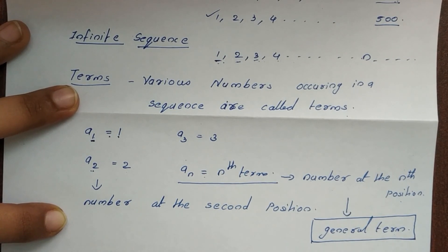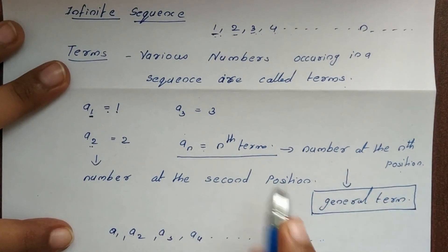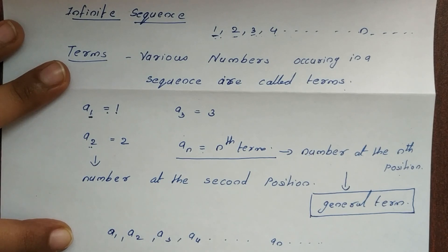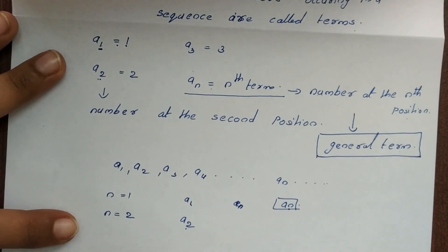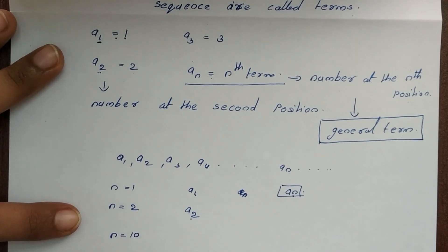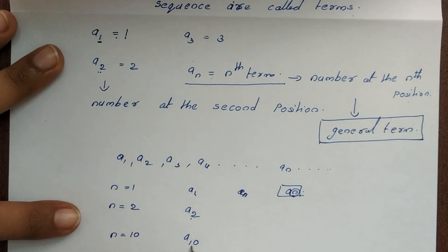For example, if n is equal to 1, we get a1. If n is equal to 2, we get a2. If n is equal to 10, we get a10. So a10 is equal to 10 — that is the number at the 10th position.